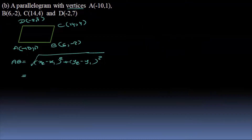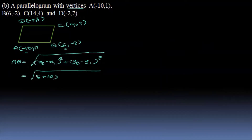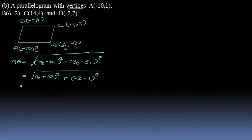To check AB: x2 minus x1 is 6 minus minus 10, so 6 plus 10. The whole square, plus y2 minus y1: minus 2 minus 1, minus 2 minus 1 the whole square. Equal to 6 plus 10 is 16.